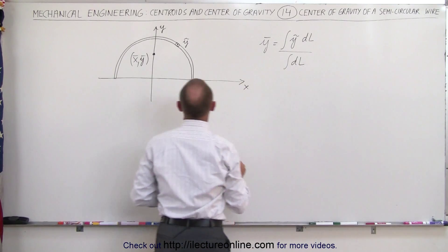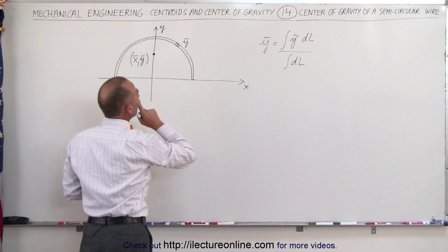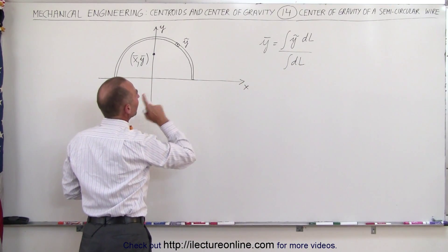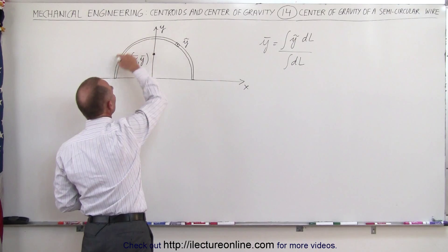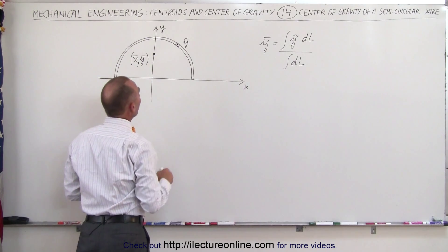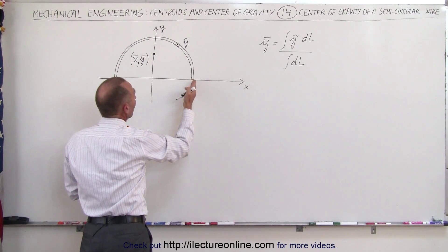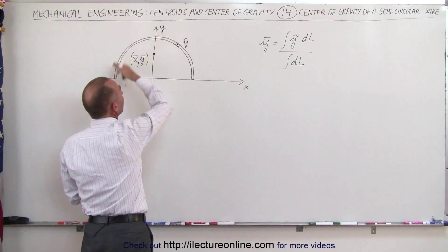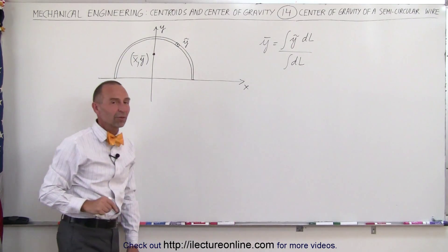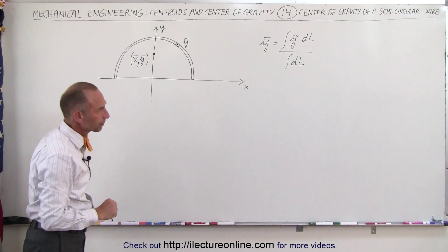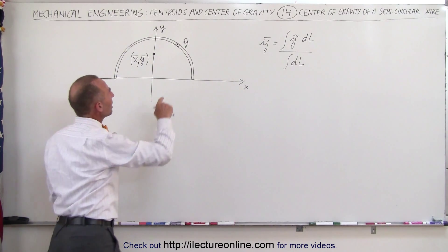We're going to integrate from where to where? From one side all the way to the other side. Or, what I can do is just go from one side to the halfway point, realizing that there's perfect symmetry on both sides.